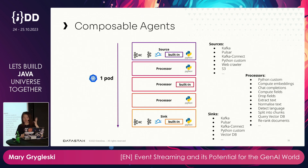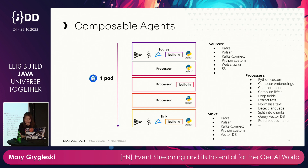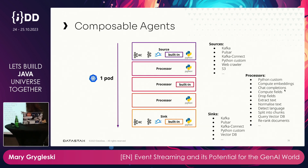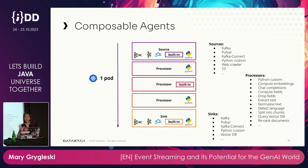LangStream also works with Kubernetes and hyperscalers like AWS, Azure, and GCP. Architecturally, it's like a data pipeline: you have sources — Kafka, Pulsar, Python, web crawlers, S3 — and data flows through a pipeline with processors that handle Python custom logic, computing embeddings, normalizing text, and detecting language. Results then get output to a sink. It's similar to traditional event streaming architecture: source → transformation → sink.